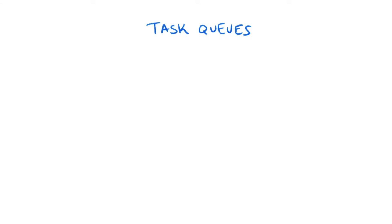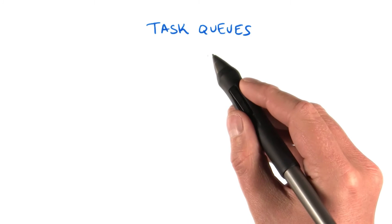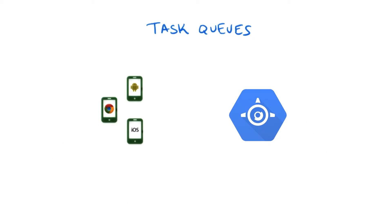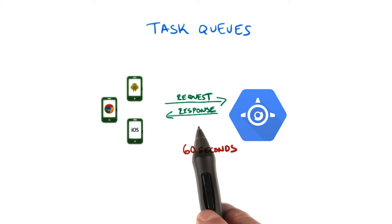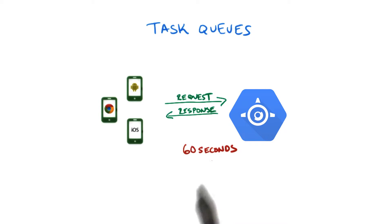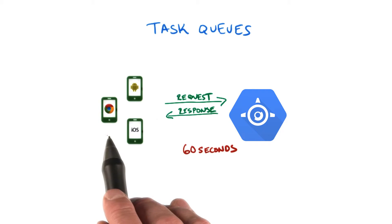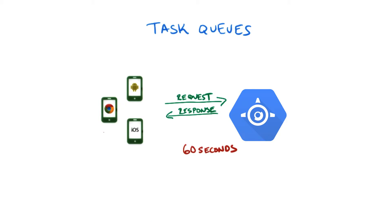Let's look at another feature that is needed to build scalable applications: task queues. So why do we need task queues? This picture should be no surprise to you — our users accessing our App Engine application from various devices, and our application returning the response. Technically, this response must be returned within 60 seconds from the request, but that's a long time. We've talked about the importance of returning a response as quickly as possible, and we don't want users to wait even seconds — certainly not 60 seconds.